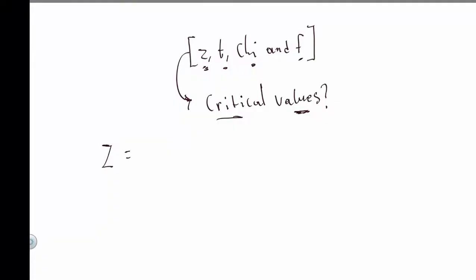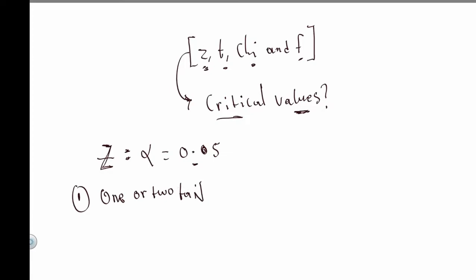For the z distribution, let's use one example. We want to find the critical value with a level of significance of 0.05. The first thing we need to do is identify what distribution we're dealing with — in this case, z. The next thing is to ask ourselves: is it a one-tail or two-tail test?